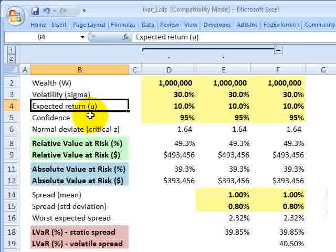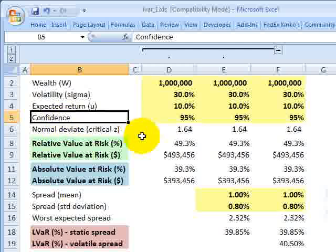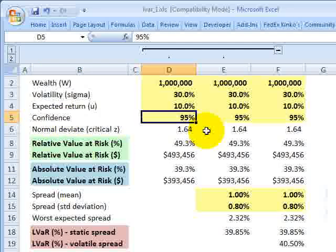Expected return, typically denoted by Greek mu, I'll assume 10%. And a confidence level, which I select, of 95%. Other popular choices are 99% or greater.